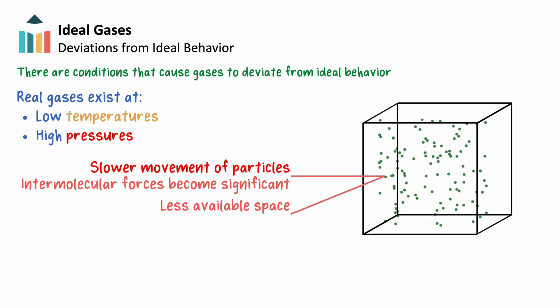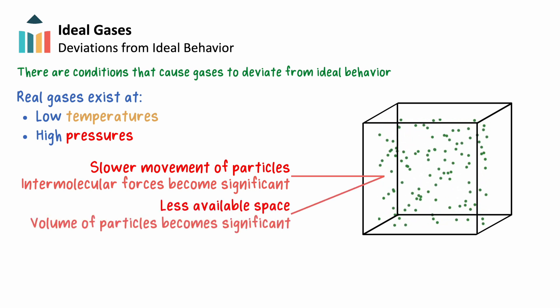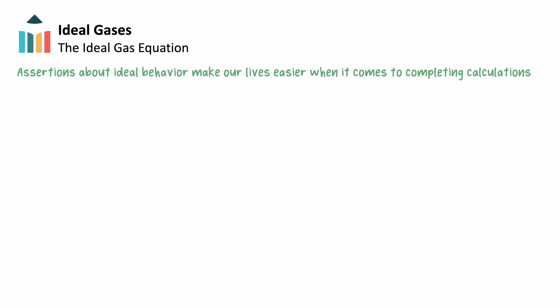At high pressures, the volume of the particles themselves become significant compared to the overall volume of the container. We can no longer ignore them. These conditions ultimately lead to deviations from the ideal gas model. But outlining the ideal behavior of most gases is really important for our conceptual understanding and for making our lives easier when it comes to completing calculations.